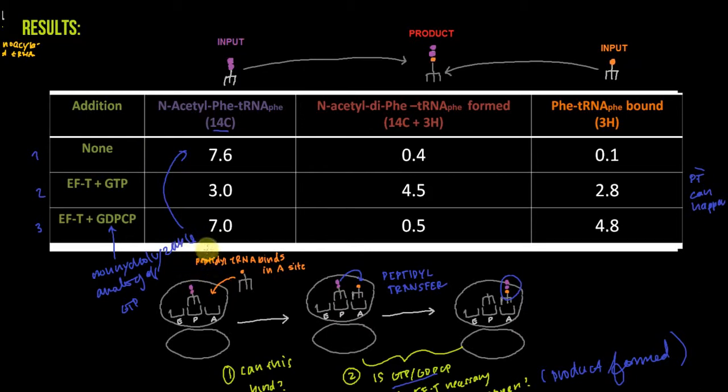The second thing is that with regards to Phe-tRNA-Phe, you get binding with GDPCP and EF-T, which indicates that GTP hydrolysis is not necessary for this to happen, because GTP hydrolysis can't happen with GDPCP. It can bind without GTP hydrolysis. As far as EF-T is concerned, GDPCP is the same as GTP for the delivery of this Phe-tRNA to the ribosome.